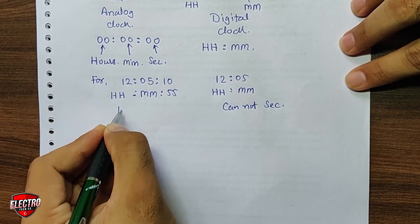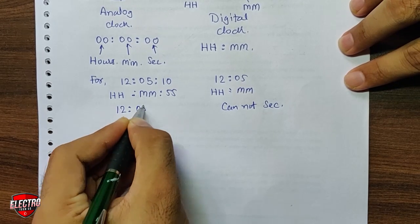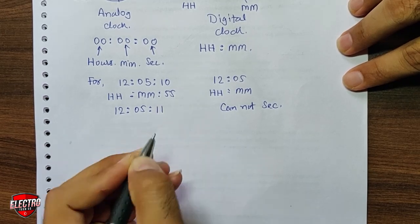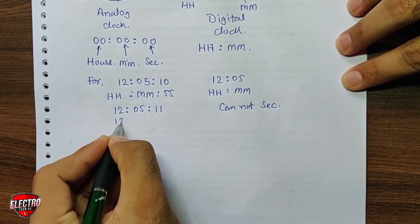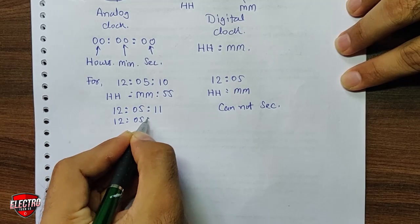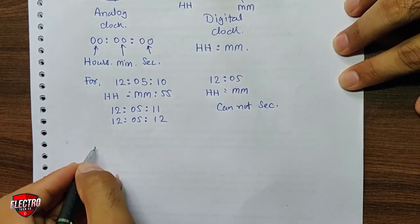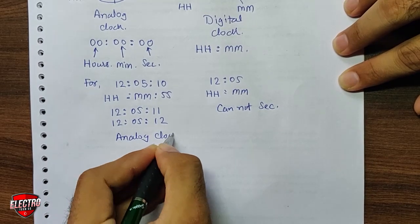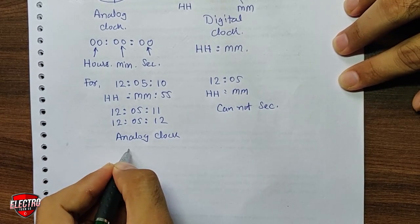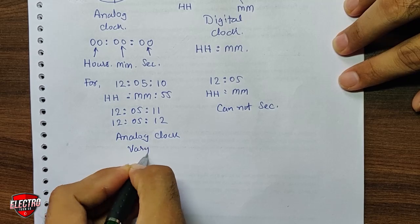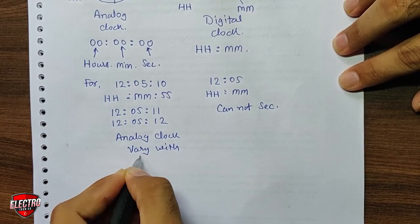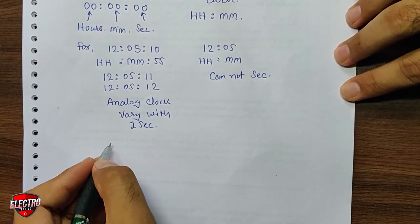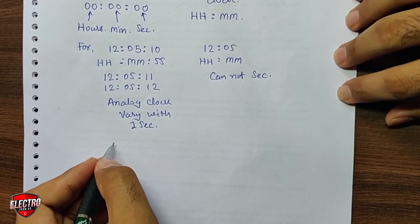When the analog clock increases by one second, the time becomes 12 hours, 05 minutes, and 11 seconds. After another second it becomes 12 hours, 05 minutes, and 12 seconds. That means the analog clock varies with every one second — at each instant of time the analog clock indicates a different time.